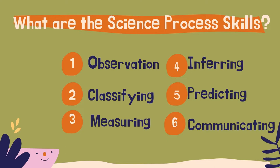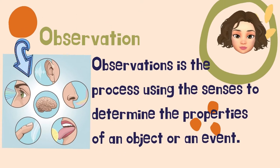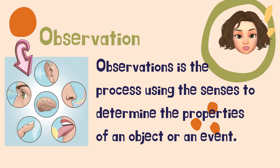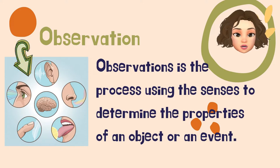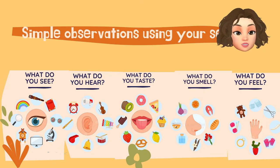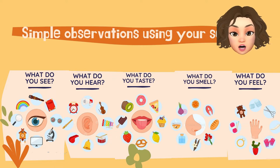In observation, observation is the process of using the senses to determine the properties of an object or an event. You can do simple observations using your senses: your sense of sight, sense of hearing, sense of taste, sense of smell, and sense of touch.